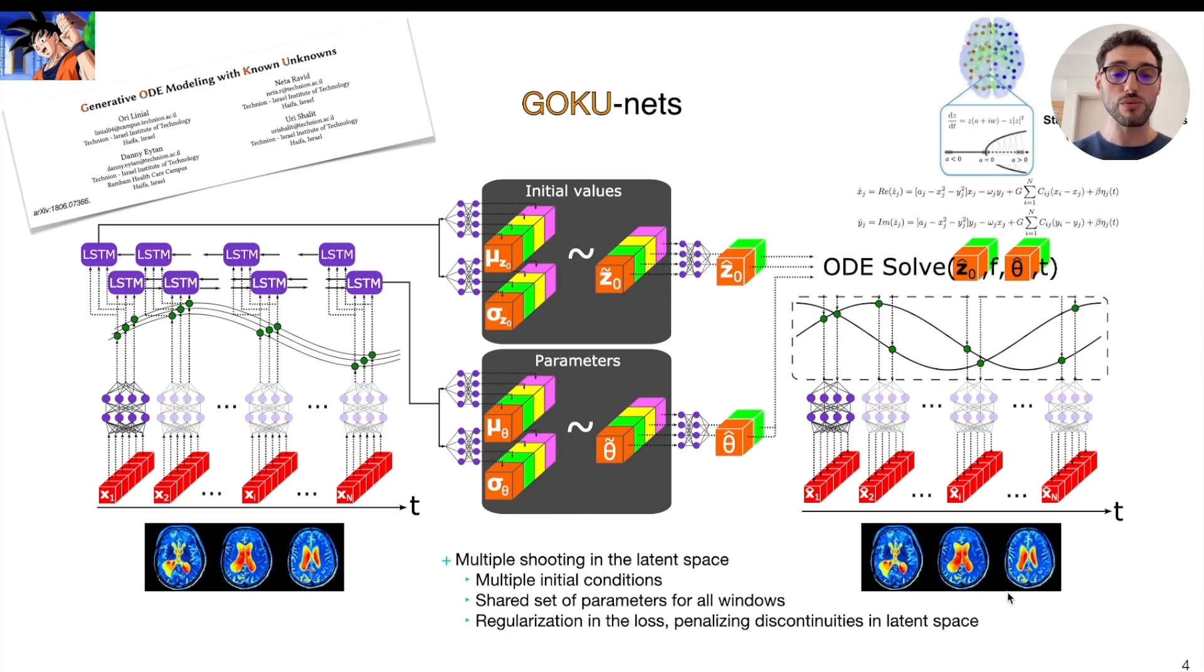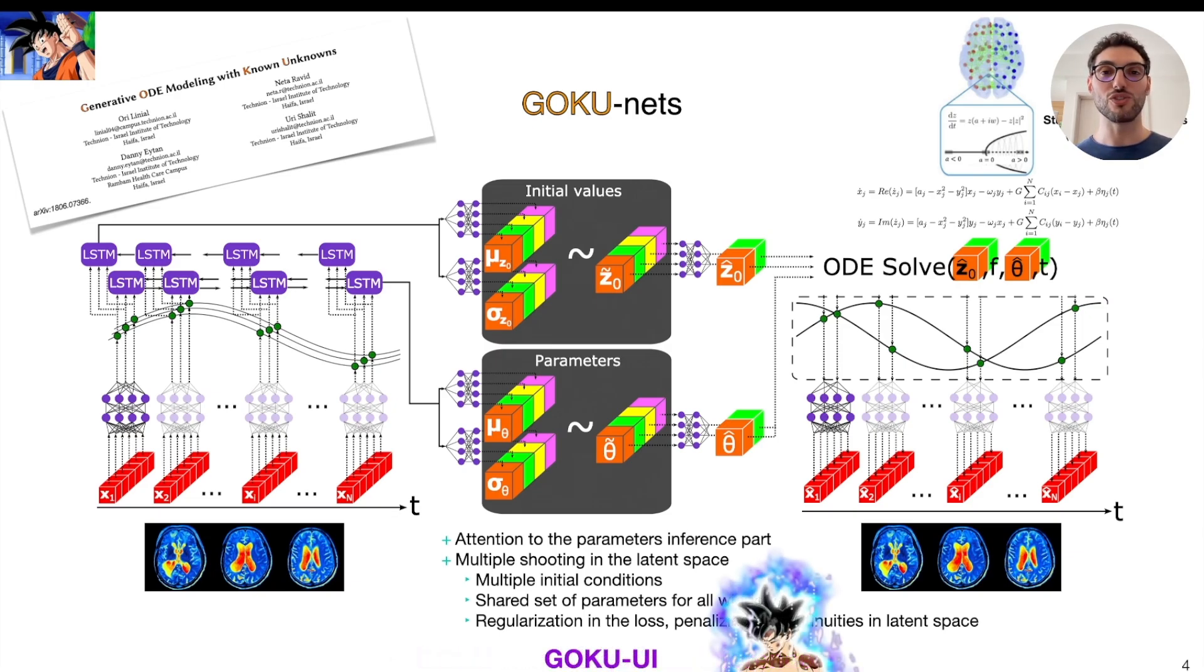In addition, we added an attention mechanism to the part of the model that inferred the parameters, which was this bidirectional LSTM, and to the GokuNets with all of these enhancements, we call it Goku with ubiquitous inference, or in short, Goku UI.